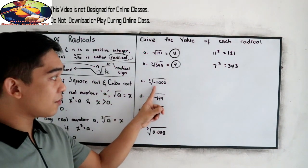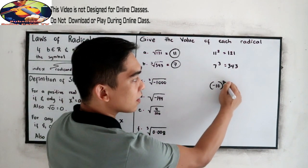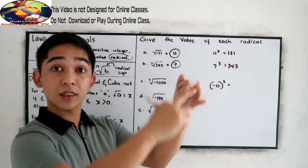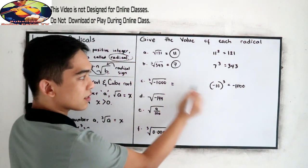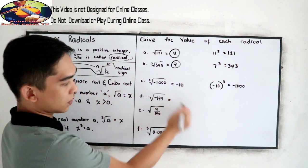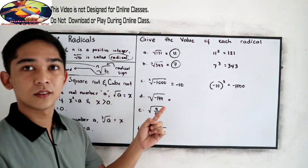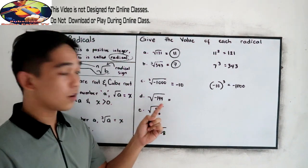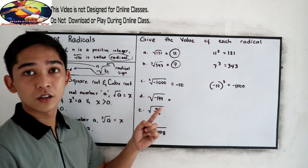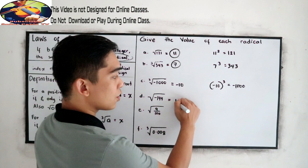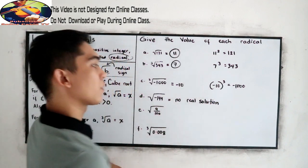Cube root of negative 1000: this can be written as negative 10 cubed, since negative 10 times negative 10 times negative 10 equals negative 1000. That means our value is negative 10. Next, square root of negative 144 — this has no real solution, no real value.